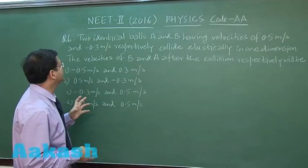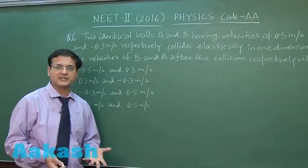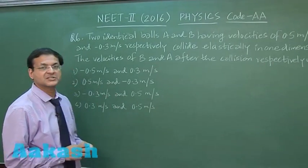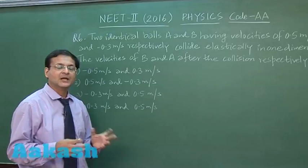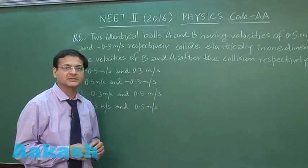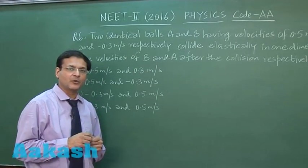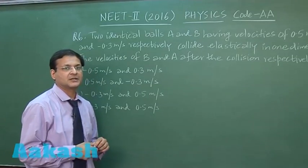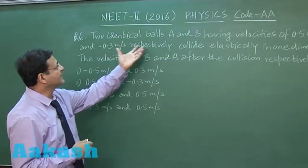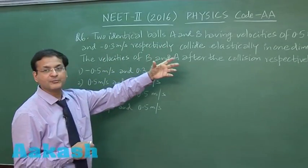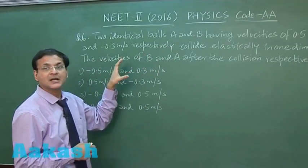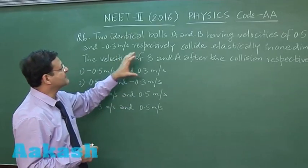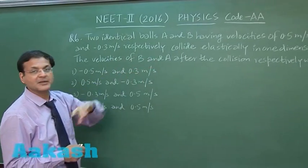Now, question 6 is a straightforward question based on one-dimensional elastic collision. This is the case when the colliding bodies have the same mass. In this kind of collision, when the colliding bodies have the same mass, velocities are interchanged. Here they say that two identical balls A and B having velocities of 0.5 m/s and -0.3 m/s respectively collide elastically in one dimension.